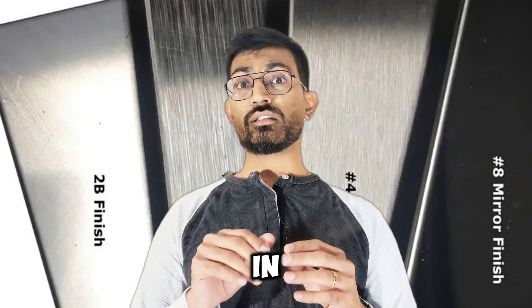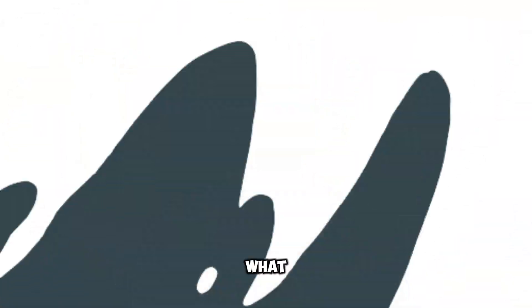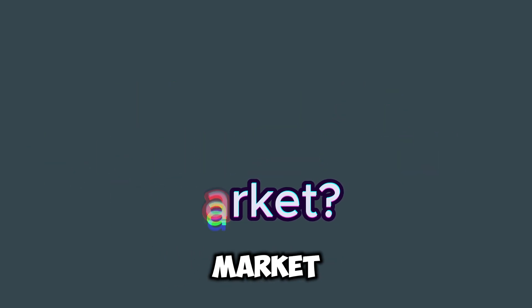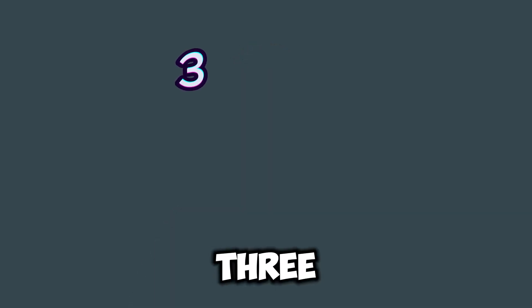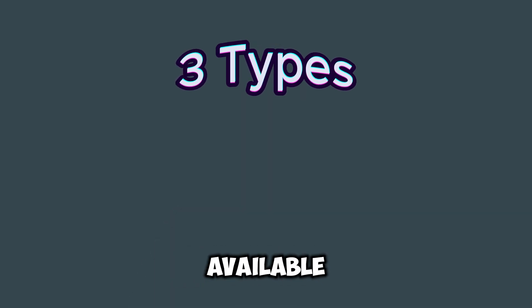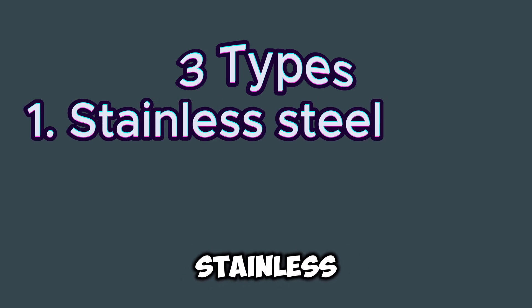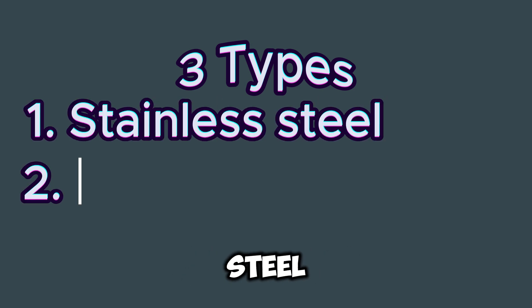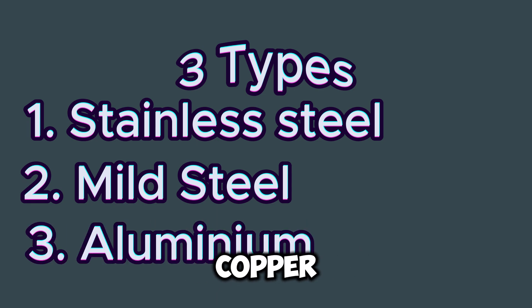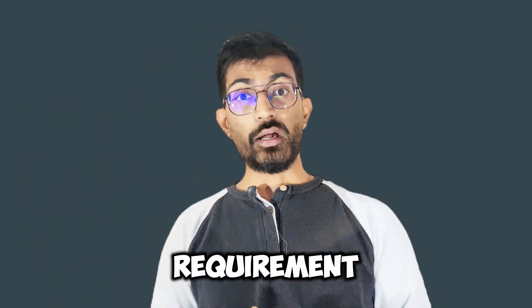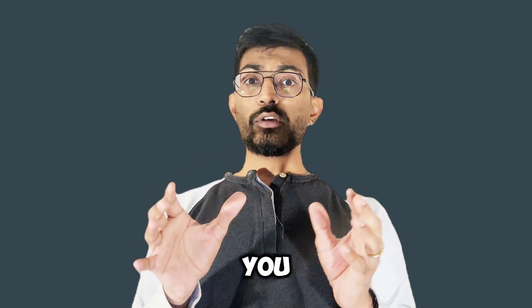The most common question being asked in the sheet metal industry is: what are the types of sheet metal available in the market? To answer this, there are mainly three types of sheet metal available for sheet metal projects: one, stainless steel; two, mild steel; and three, aluminium. Sometimes we can use copper or bronze depending on the use or the customer's requirement.